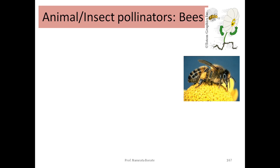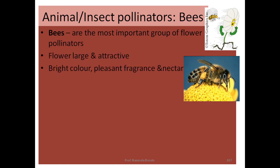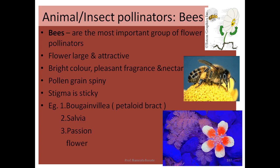The second phenomenon is the characteristics present for bee pollination, as bees are the most common pollinating agent. The flowers are large and attractive, brightly colored, with pleasant fragrance and nectar. Pollen grains are fine and the stigma is sticky. This is observed in Bougainvillea — that is petaloid bracts — Salvia, and passion flower.